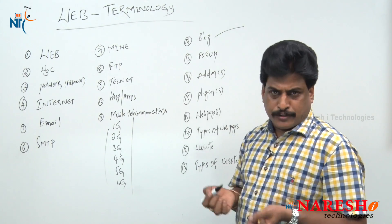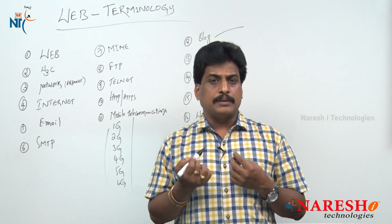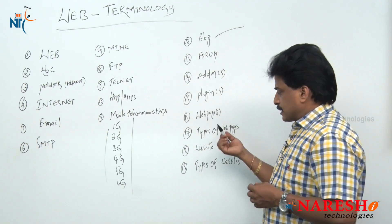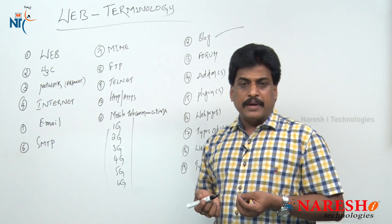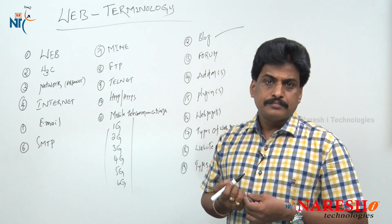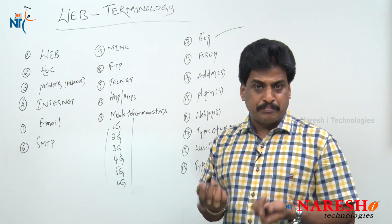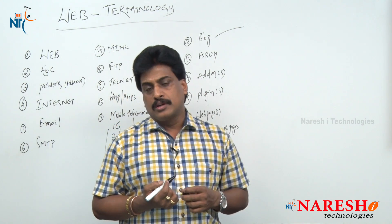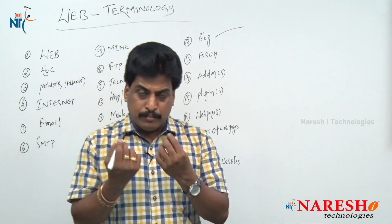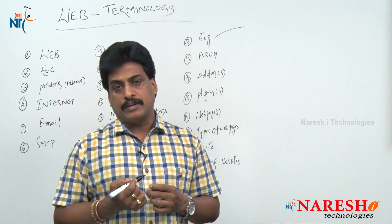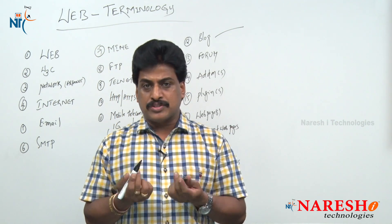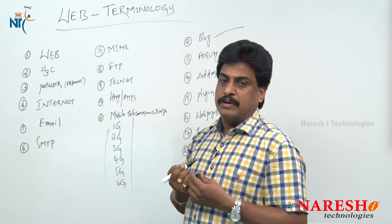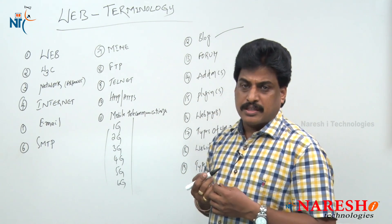Next one is plugin — it is a kind of software, additional software to the web browser. The best examples of plugins are Flash Player and Adobe PDF Reader. Next one is web page. A web page is nothing but a page which is able to open with the help of a web browser. A page developed on HTML is called a web page. Web pages are classified into two types: static web pages and dynamic web pages. A static web page is one where a user is unable to interact directly with the page — developed completely on HTML and CSS. A dynamic web page is one where a user can directly interact — developed on HTML, CSS, and JavaScript.